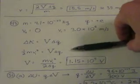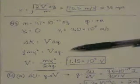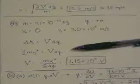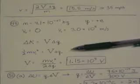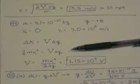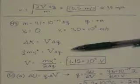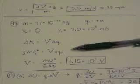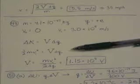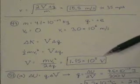So we have 1/2 mv squared, and what I haven't written is minus 0, so minus that initial kinetic energy, equals voltage times delta q. So you solve for the voltage, and you get 1.15 times 10 to the fifth volts.